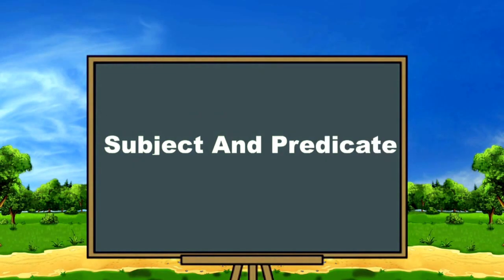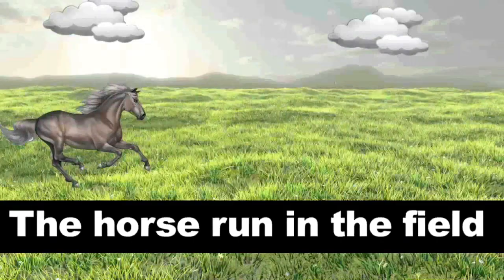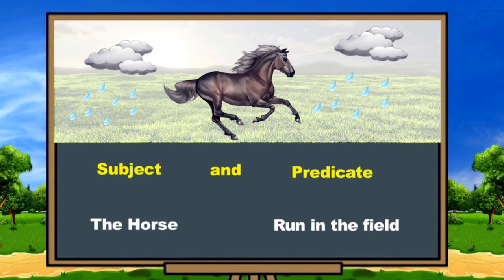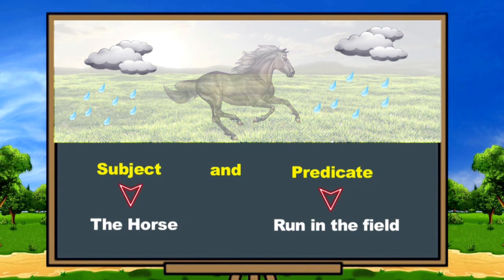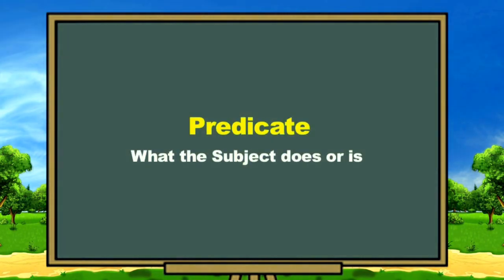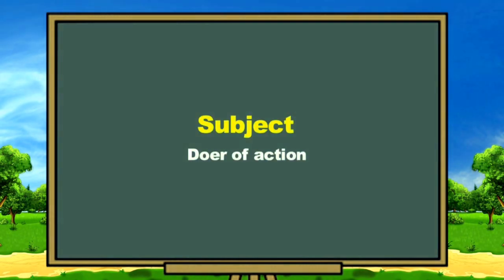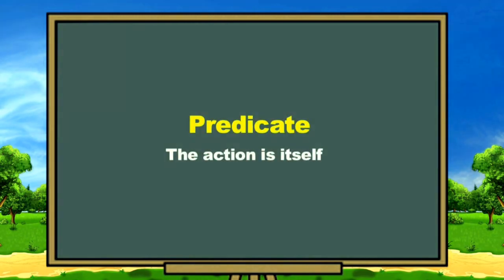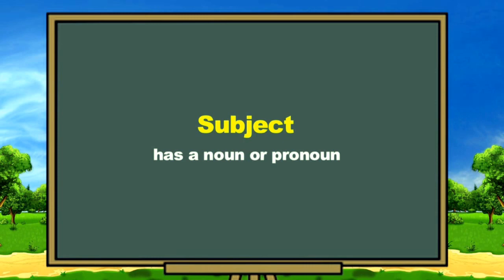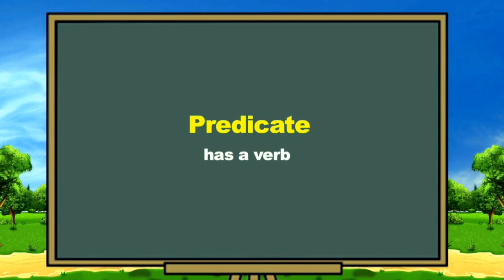Subject and predicate examples: 'The horse ran in the field.' Here, 'the horse' is the subject and 'ran in the field' is the predicate. The subject tells who or what the sentence is about. The predicate tells what the subject does or is. The subject is the doer of the action; the predicate is the action itself. A subject has a noun or a pronoun, and a predicate always has a verb.